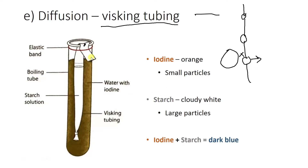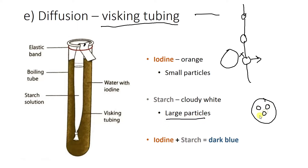What you should have done in class is a little practical or demo on this visking tubing. Inside the actual visking tubing — inside the cell, as this is demonstrating — we have a starch solution. This goes a cloudy white colour in the middle, and they are full of large particles. So we would have lots of big bits of starch inside our visking tubing. If you were looking from the bird's eye view here, that's what it would be like.